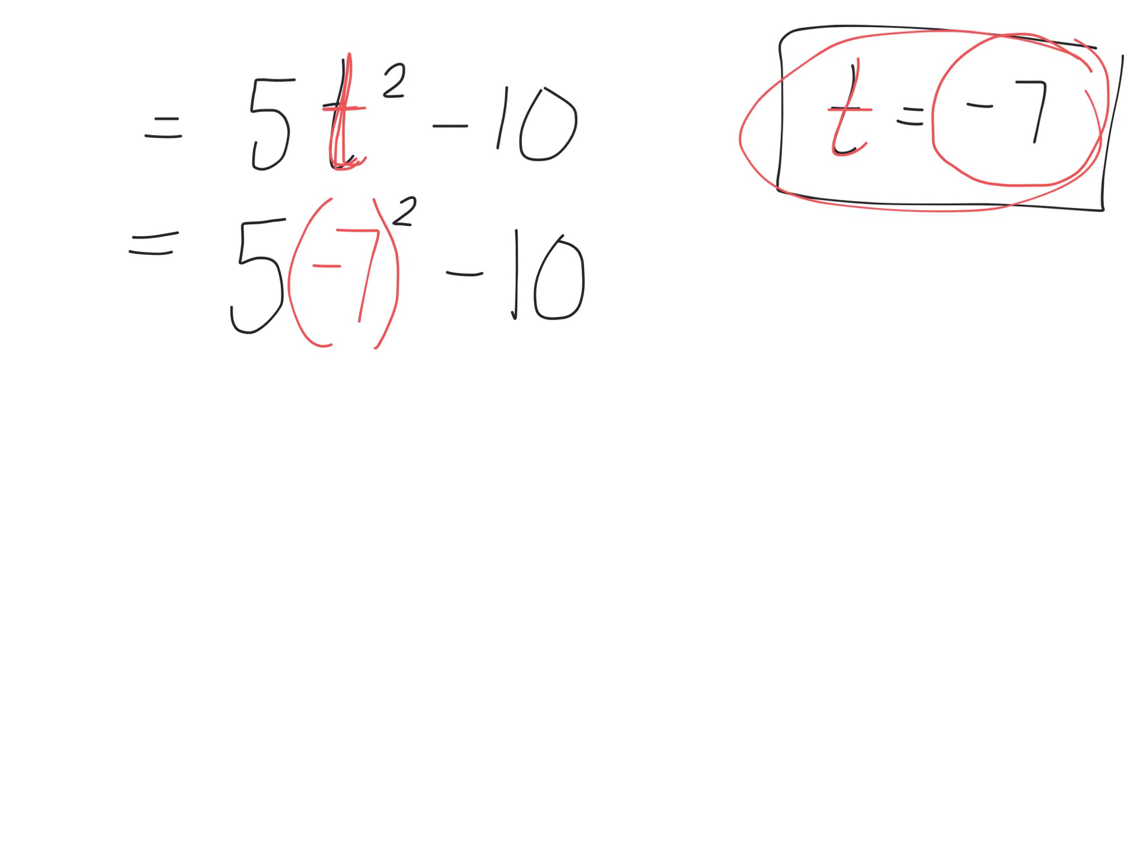Does everyone understand that part? Now this is where a lot of you made a mistake. Again, BEDMAS. The very first thing you have to do, well we don't have any brackets, we don't have anything inside a bracket, we have exponents. So some of you messed this up because you did not do this first. You have to solve the exponents first.